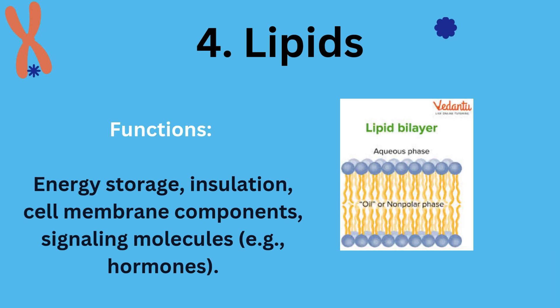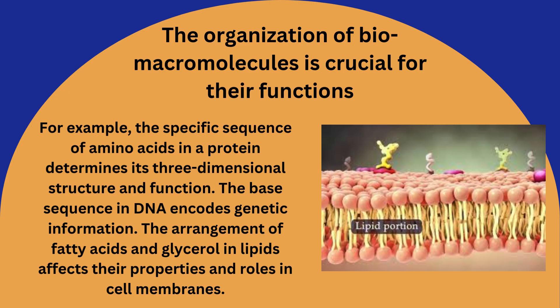Functions: energy storage, insulation, cell membrane components, signaling molecules e.g. hormones. The organization of biomacromolecules is crucial for their functions. For example, the specific sequence of amino acids in a protein determines its three-dimensional structure and function. The base sequence in DNA encodes genetic information. The arrangement of fatty acids and glycerol in lipids affects their properties and roles in cell membranes.